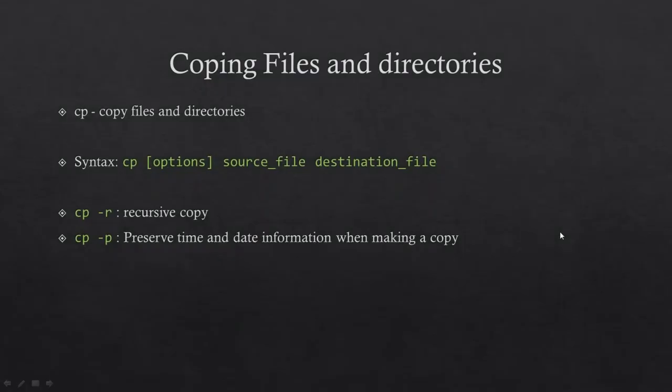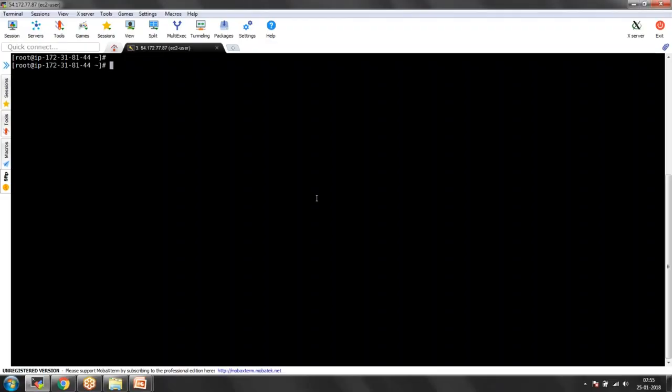In today's session we are going to see how to copy files from one file to another file or one directory to another directory. To copy files in Unix operating system we are going to use a command called CP. CP is going to copy files or directories, but if you just use the CP command it is going to copy a file. If you want to copy a directory you need to use CP minus R. R stands for recursively — if you have multiple files within a directory and you want to copy everything, you must use R, otherwise only the parent directory is going to get copied.